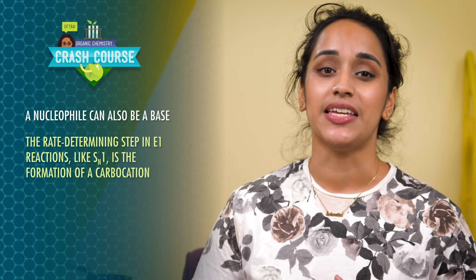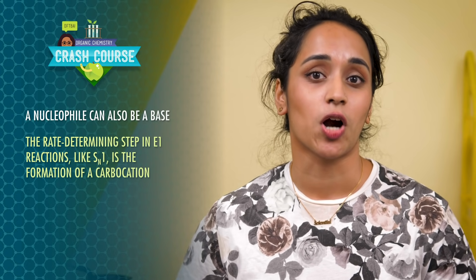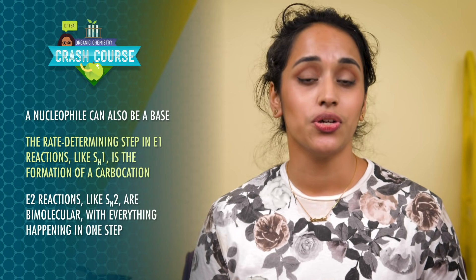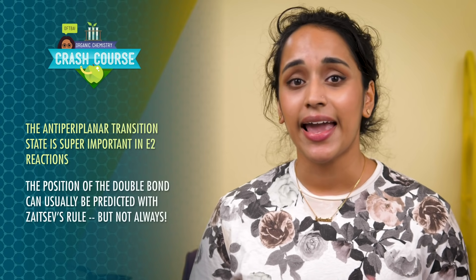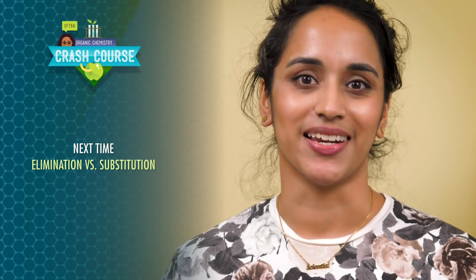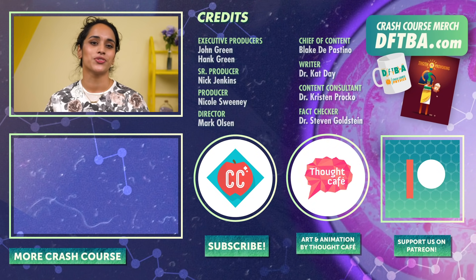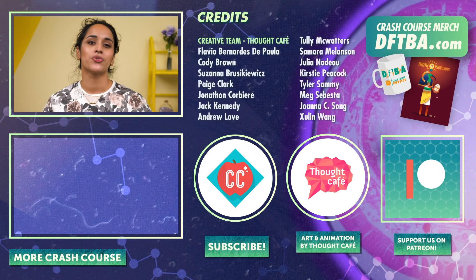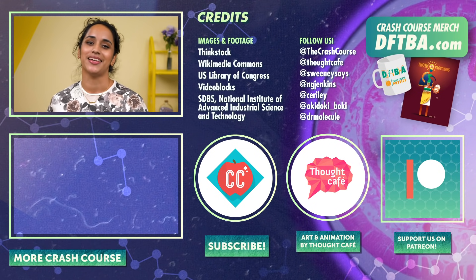In this episode, we learned a lot! Specifically that a nucleophile can also be a base. The rate-determining step in E1 reactions, like SN1, is the formation of a carbocation. E2 reactions like SN2 are bimolecular, with everything happening in one step. The anti-periplanar transition state is super important in E2 reactions, and the position of the double bond can usually be predicted with Zaitsev's rule – but not always. In the next episode, we'll look more closely at elimination versus substitution and make sense of these competing mechanisms. Thanks for watching this episode of Crash Course Organic Chemistry. If you want to help keep all Crash Course free for everybody, forever, you can join our community on Patreon.